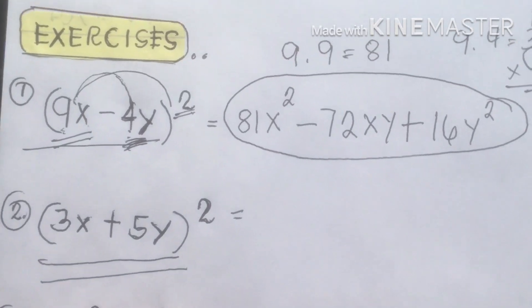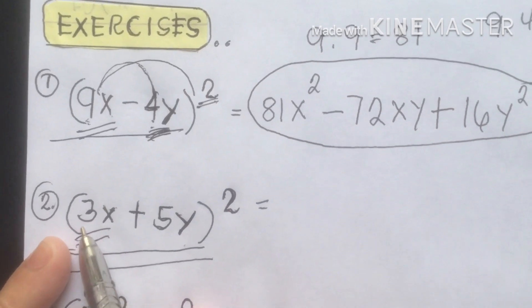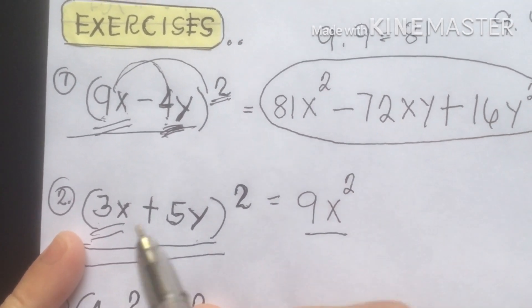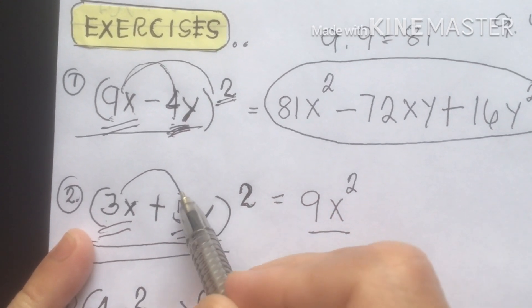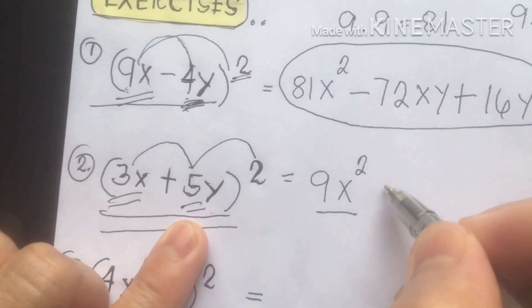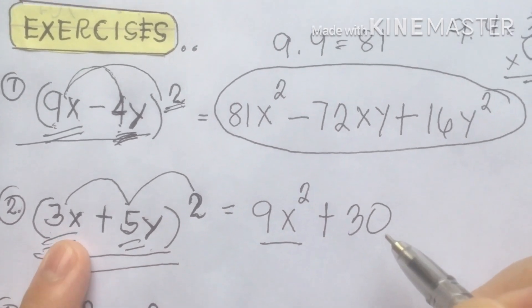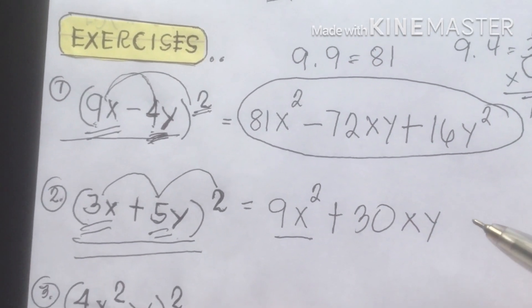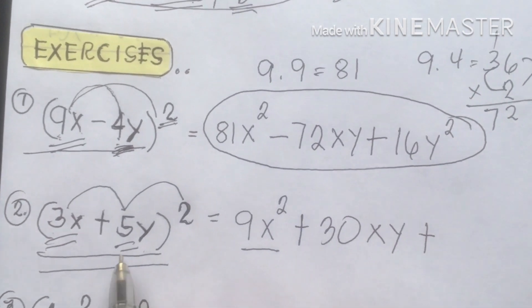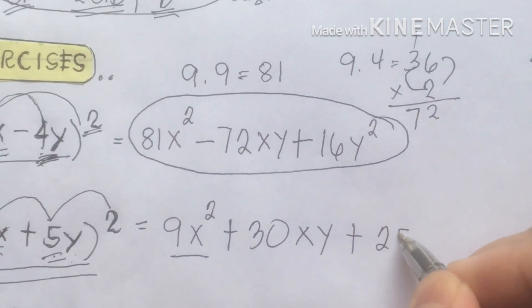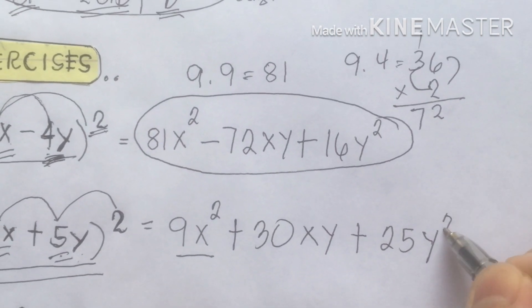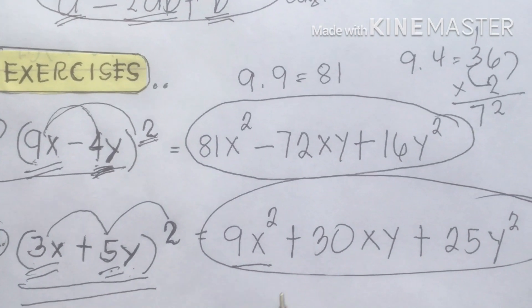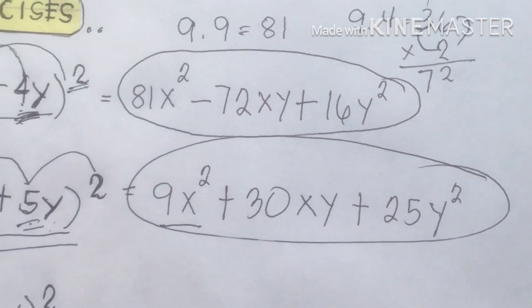Number two: (3x + 5y) squared. First term: 3 times 3 is 9, so 9x squared. Then the product of the first and second terms times 2: 3 times 5 is 15, times 2 is 30, giving 30xy. Then the second term: 5 times 5 is 25, y times y is y squared, so plus 25y squared. The answer for number two is 9x squared plus 30xy plus 25y squared.